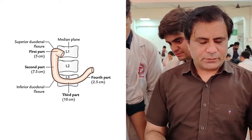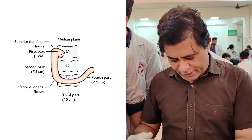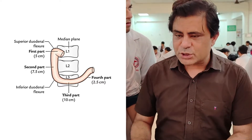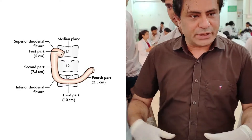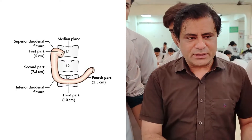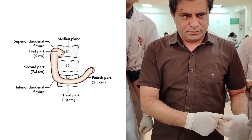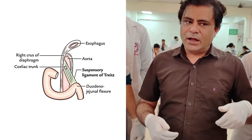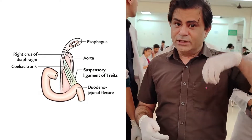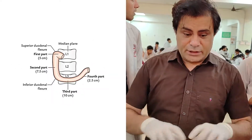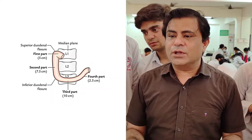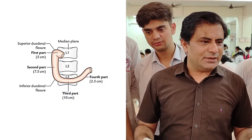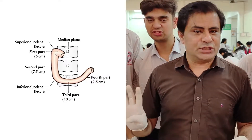The horizontal or third part goes from the right side of the spine to the left side of the spine, crossing in front of L3. It is horizontal but slightly elevated on the left side due to the ligament of Treitz. This is the longest portion of the duodenum at 10 cm, which is 4 inches.